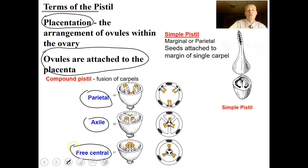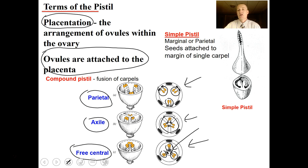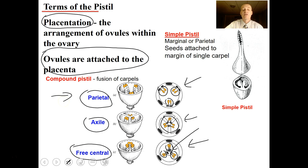In parietal placentation, the ovules are attached to the wall of the ovary. In axial placentation, the ovules are attached to a central part of the ovary rather than the wall. In free central placentation, there's a central structure the ovules are attached to. Next time you cut up a bell pepper, apple, or tomato, you can actually see this placentation. It goes from relatively simple parietal to the most evolved free central placentation.